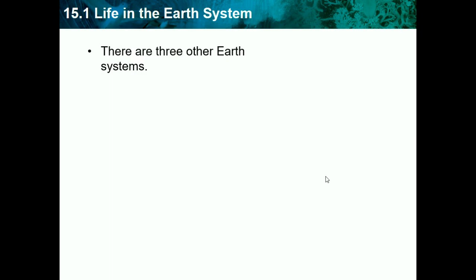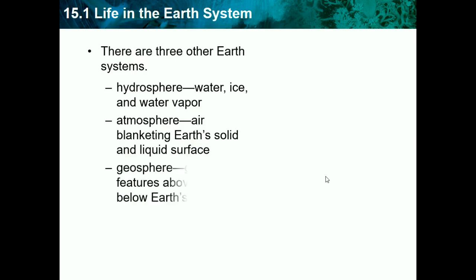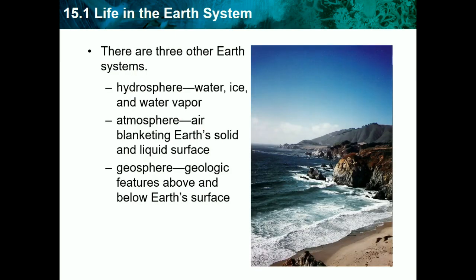There are three other Earth systems. We have the hydrosphere, atmosphere, and geosphere. The hydrosphere is water, ice, and water vapor — anything that has to do with water. The atmosphere is the air blanket around Earth's solid and liquid surfaces. And then we have the geosphere, which is basically the geologic features above and below Earth's surface, like rocks and the Earth's crust.